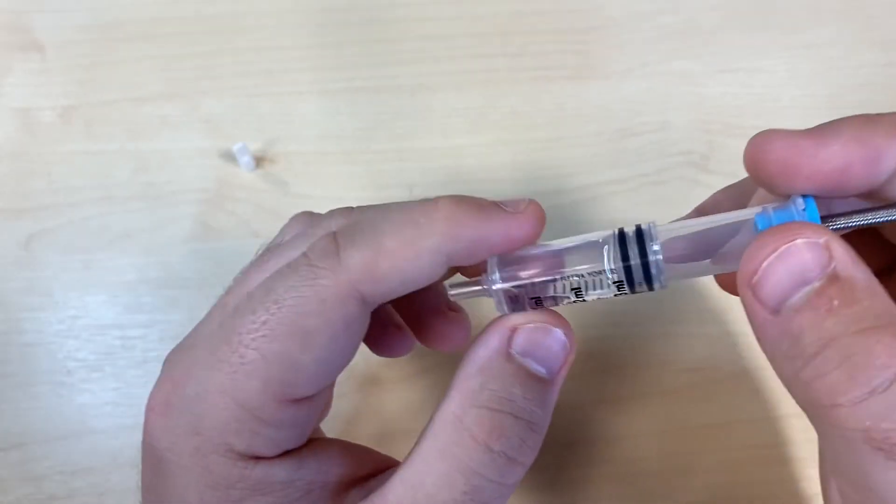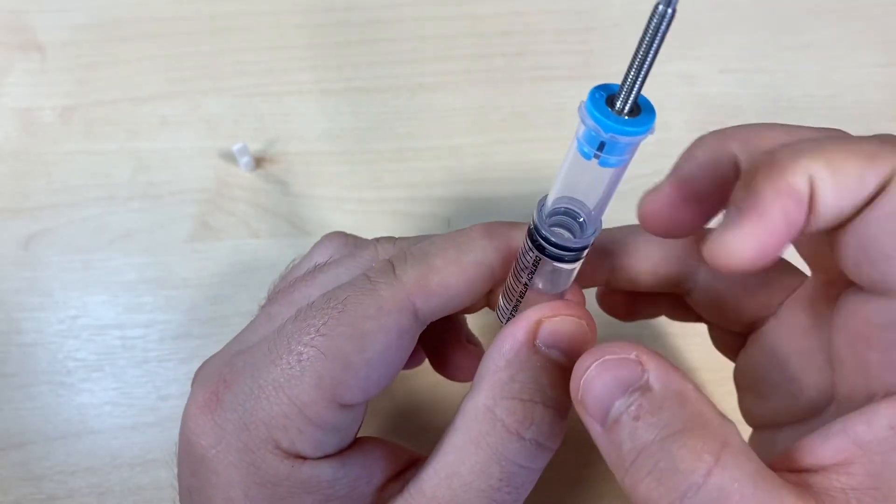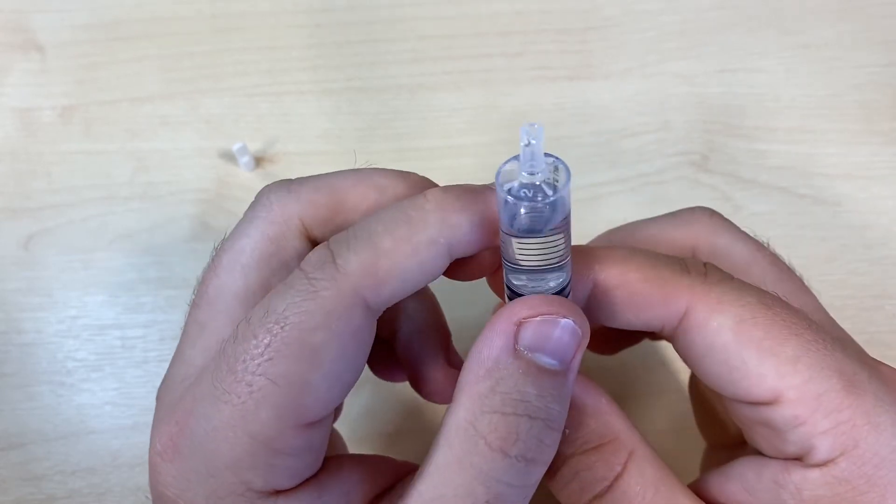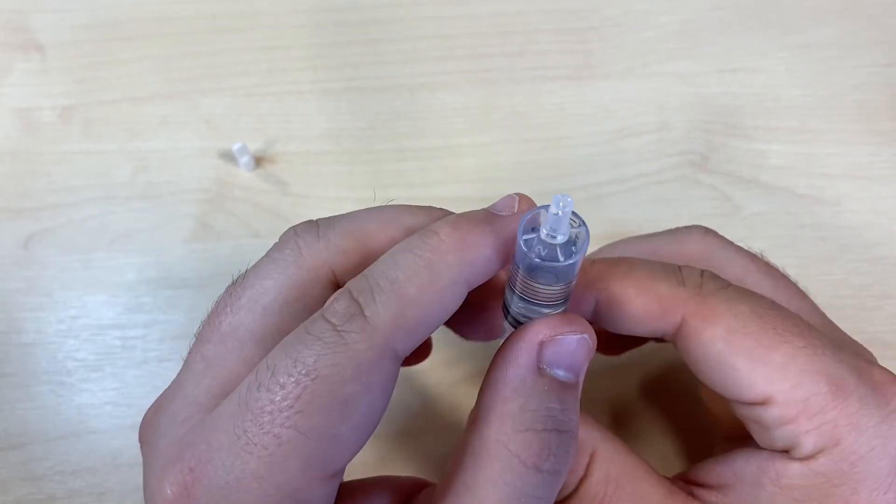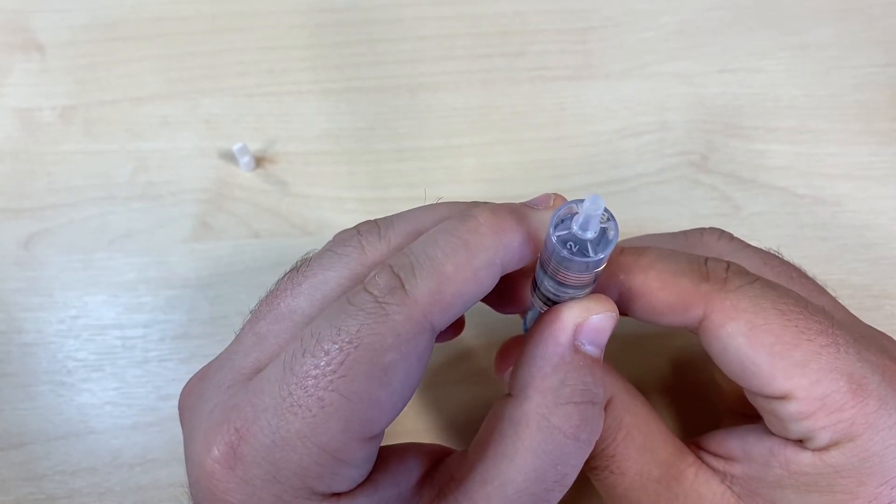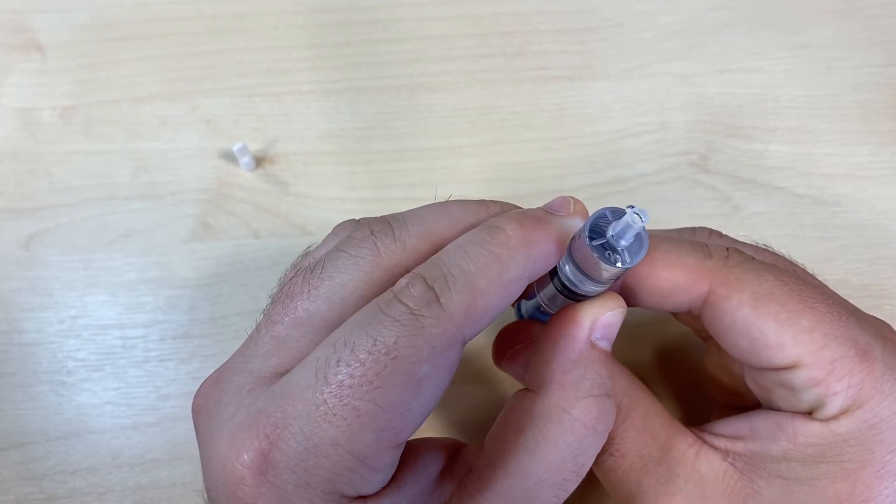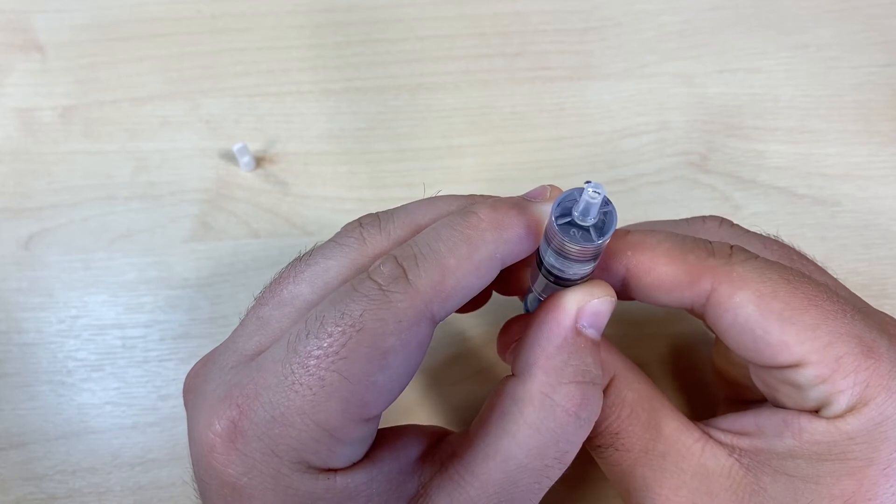If there's any stubborn bubbles, you can always give them a tap. Once you've collected all your air up at the top of the syringe, holding it as vertically as you can, push all the air out until you only have insulin filling the neck.